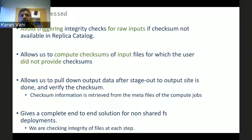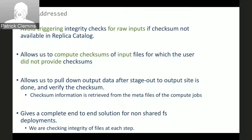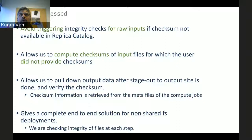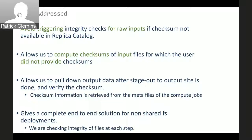Overall, the cases we have addressed so far include: the ability to avoid triggering integrity checks for raw inputs if checksums are not available in the replica catalog and the user desires that; computing checksums of input files for which the user did not provide checksums; pulling down output data after stage-out to the output site to verify the checksum. Our goal has been to give a complete end-to-end solution for non-shared FS deployments, doing integrity checking of files at each step wherever possible.